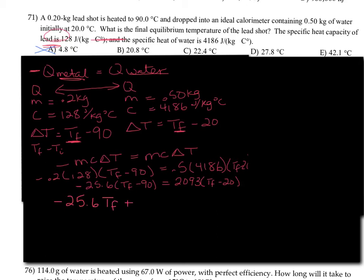That's going to change it to a plus. So 90 times 25.6 is 2304, equal to 2093 T_F minus 20 times 2093. Big number: 41860.